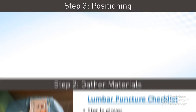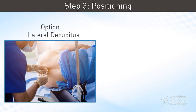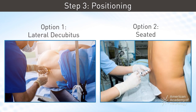Next step is positioning. The patient adopts the lateral decubitus position, knees to chest and chin down, to increase vertebral space for needle insertion. Another option is a sitting position with the patient leaning forward from the bed's edge.